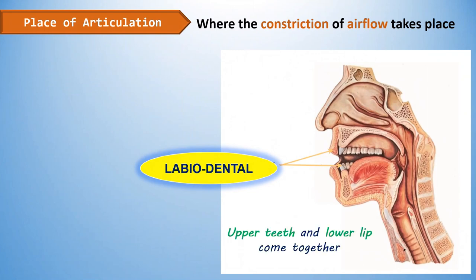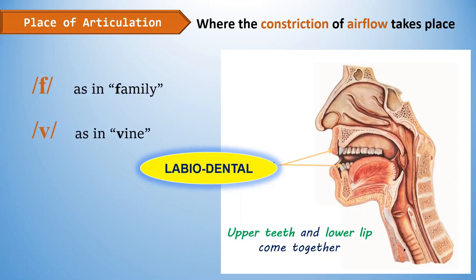Labiodental sounds are produced by curling the lower lip back and raising it to touch the upper teeth. Labiodental consonant sounds are F as in 'family' and V as in 'vine.'